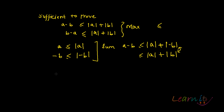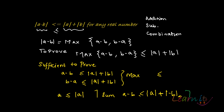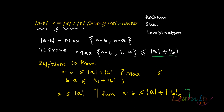On the other hand, to prove b minus a: we know b ≤ |b| and minus a ≤ |minus a|. By taking the sum, we get b minus a ≤ |b| + |minus a|, which is the same as |b| + |a|. Since both inequalities hold, the max is less than or equal to the RHS, and hence LHS is less than or equal to RHS. The proof is complete.